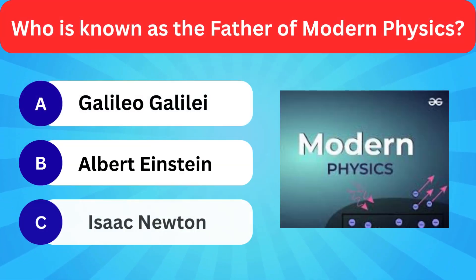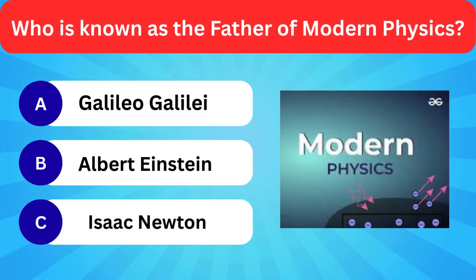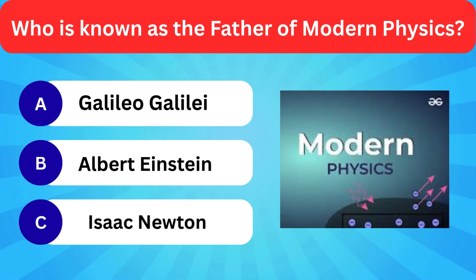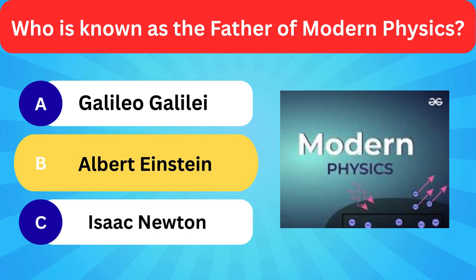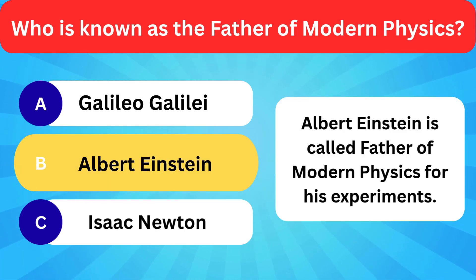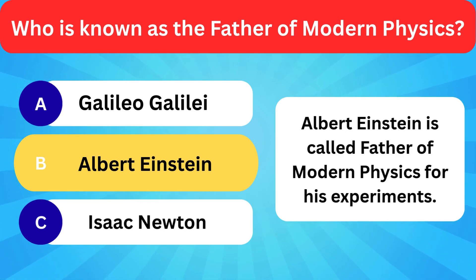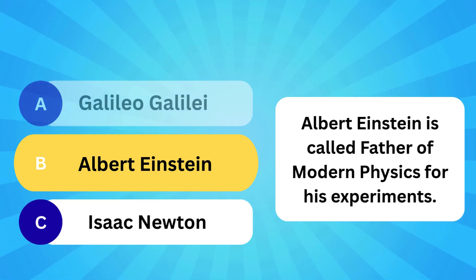Who is known as the father of modern physics? Options: Galileo Galilei, Albert Einstein, Isaac Newton. Correct answer is Albert Einstein. Albert Einstein is called father of modern physics for his experiments.